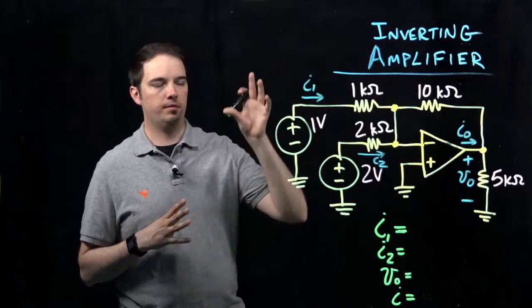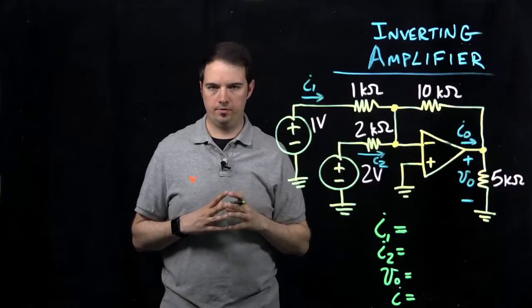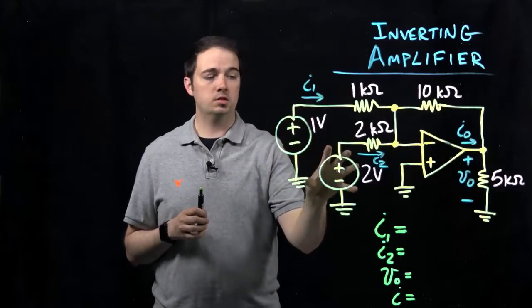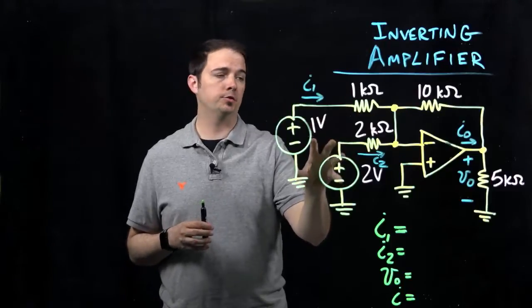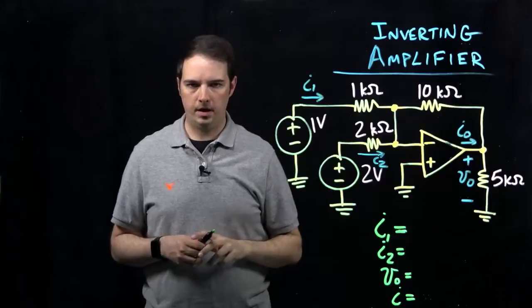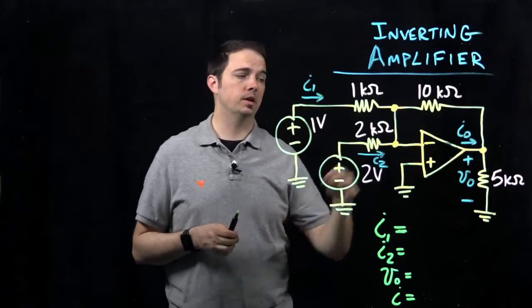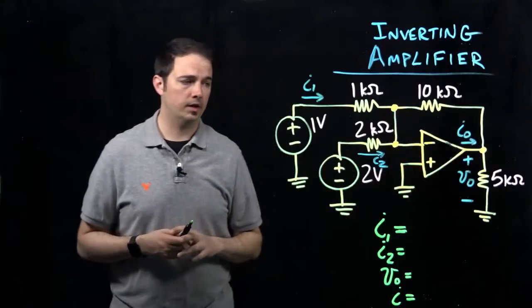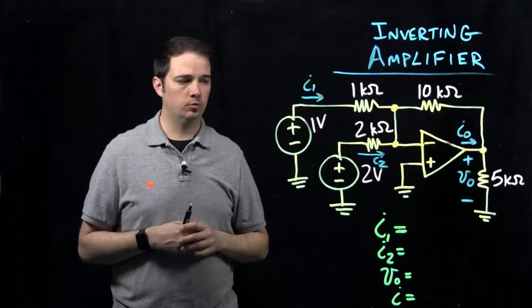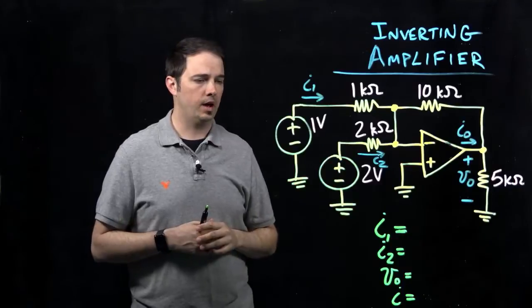Specifically, we have the case of an inverting amplifier. We know it's inverting because we have two sources both tied into the negative terminal of our op amp, thereby automatically informing us that our output voltage V0 is going to be inverted with respect to whatever the two voltages on the input happen to be.